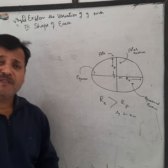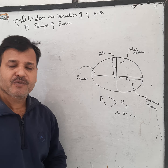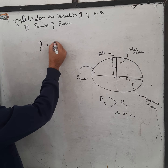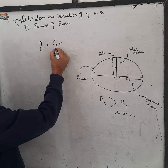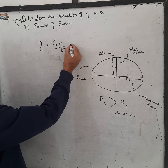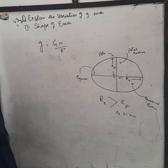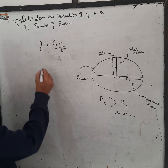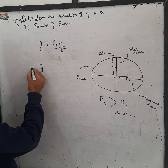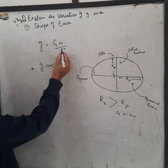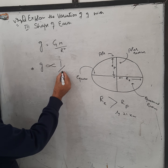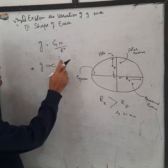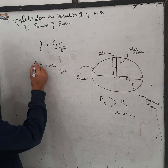Now we will see the value of g. We know the value of g is given by GM upon r squared. This implies that g is inversely proportional to r squared, as the mass of earth and G are taken as constants.